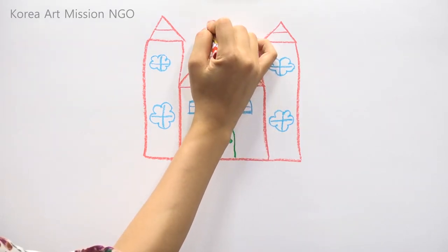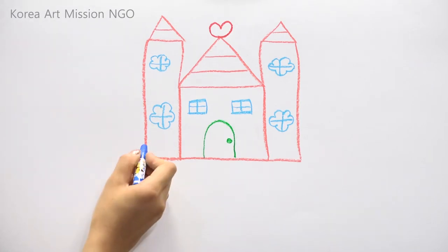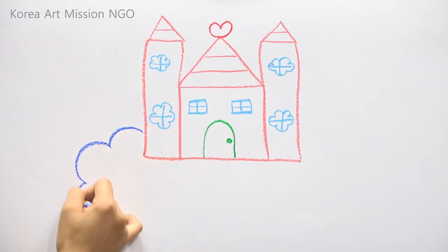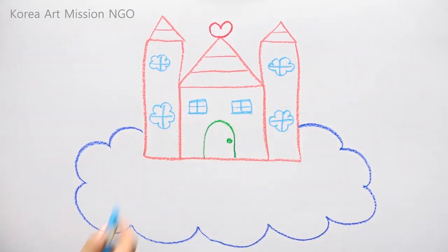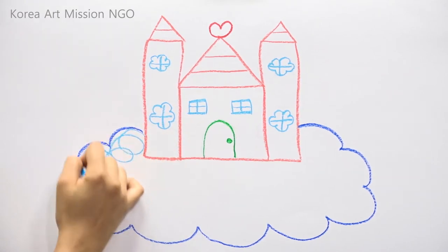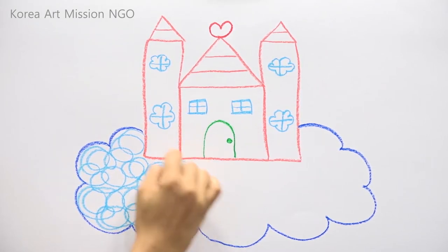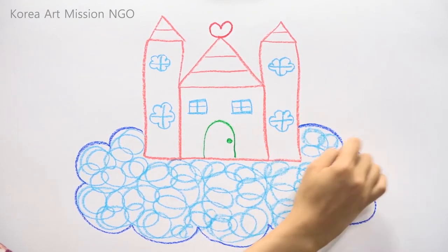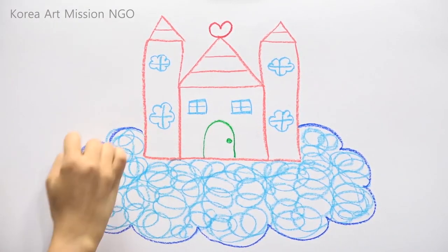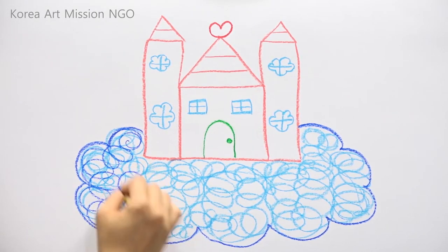Here on the roof, I drew a heart. And let's draw a big cloud like this. Then fill inside the clouds with rounded lines. And let's color it in dark blue around and around.